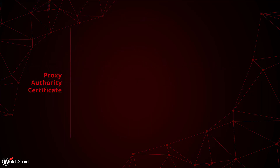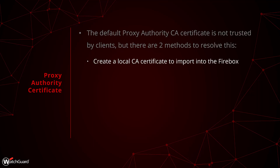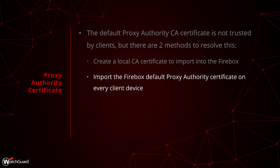The default proxy authority CA certificate on the firebox is not trusted by any client devices. There are two ways to resolve this: we can use a local CA like Active Directory to create an intermediate or subordinate CA certificate that we import onto the firebox, or you can distribute the default proxy authority certificate — but there are quite a few downsides with that method and it tends to be more work.